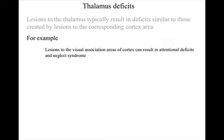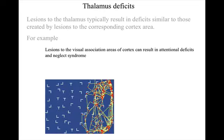If there's damage to the visual association areas, there are some characteristic cognitive deficits that result. For example, if a patient with damage to the right visual cortex is asked to study a visual field — like counting the number of letter T's in this illustration — their eye movements, shown in yellow, and eye fixations, shown in red,